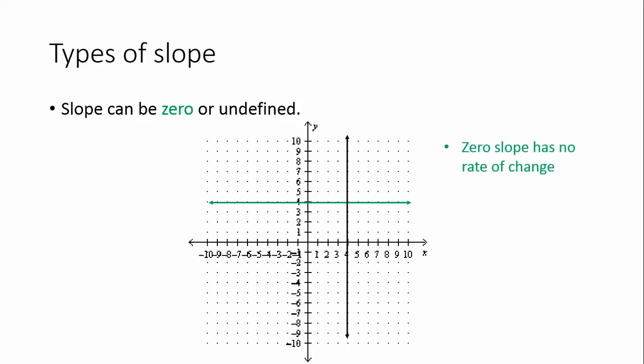We've talked about positive and negative slope. Now the last two types are zero slope and undefined slope. The green line on the graph indicates zero slope — it's a completely horizontal line with no rate of change and no steepness, like a flat road. The other type is undefined slope: any time you have a vertical line, the slope is undefined. So zero slope is horizontal, and undefined slope is vertical.